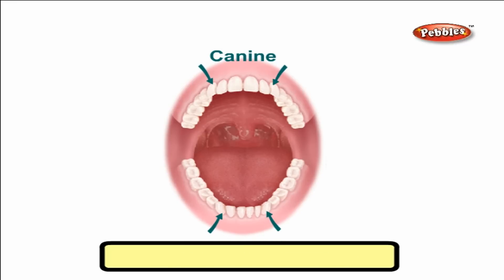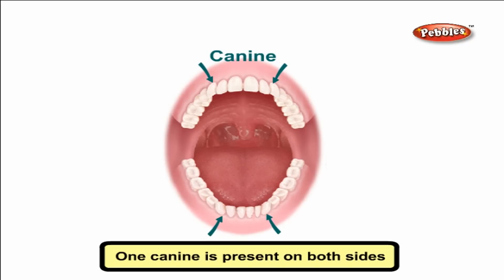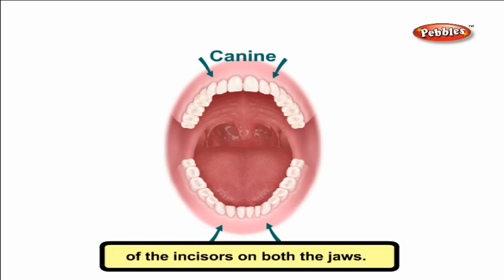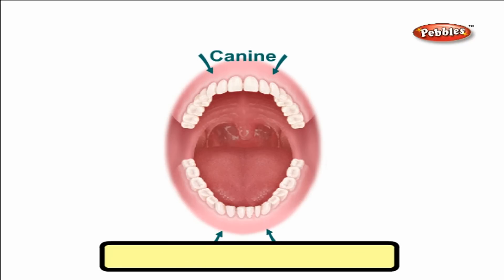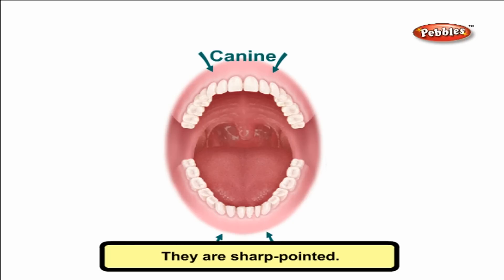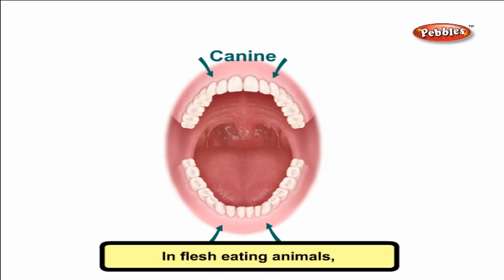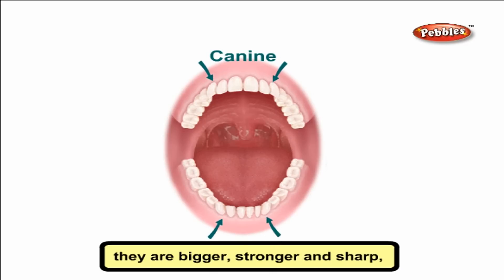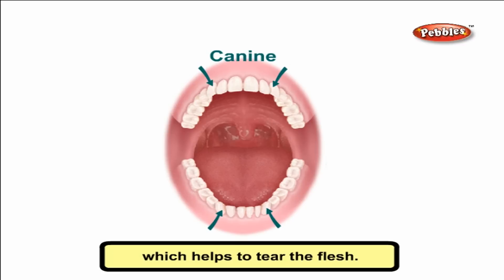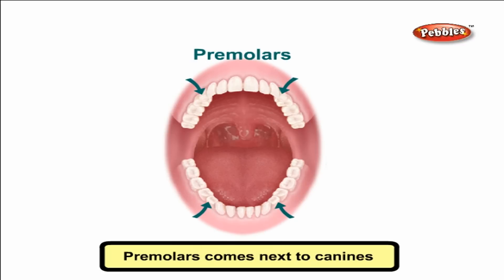Canines are the tearing teeth. One canine is present on both sides of the incisors on both the jaws. There are total four canines. They are sharp pointed. In flesh-eating animals, they are bigger, stronger and sharp, which helps to tear the flesh.